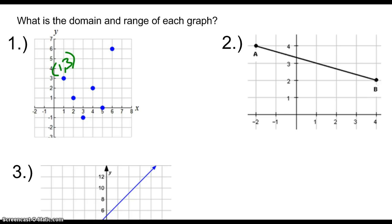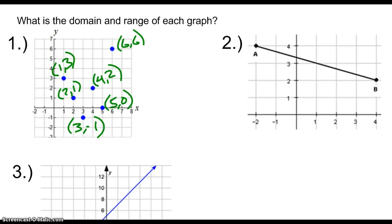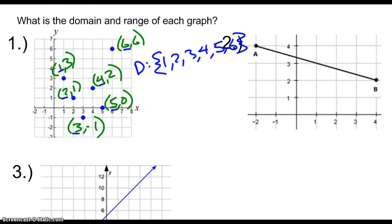Let's get all the points first: (1, 3), (2, 1), (3, negative one), (4, 2), (5, 0), and (6, 6). Remember, your domain is that first value, the x value. We have specific points, not a continuous line or anything like that. So we'll look at the x values: one, two, three, four, five, and six. You will want to list out all of them — you don't want to just say one through six or anything like that.